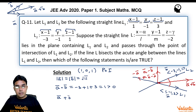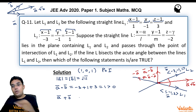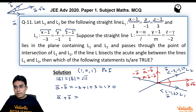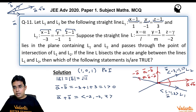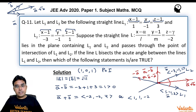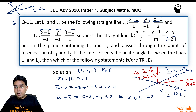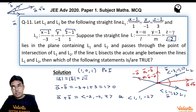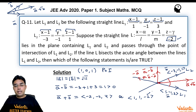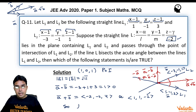Computing a+b by adding corresponding direction ratios: (1+(−3), −1+(−1), 3+1) = (−2, −2, 4), which simplifies to (1, 1, −2) after dividing by −2. Since line L has direction ratios (l, m, −2), and the third direction ratio matches, we directly get l = 1 and m = 1.